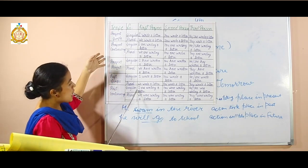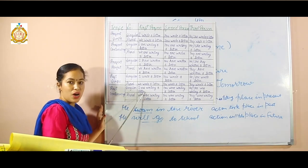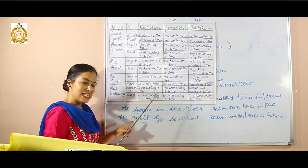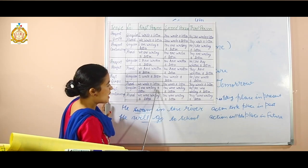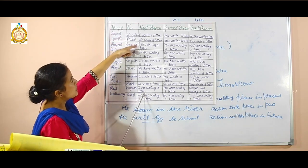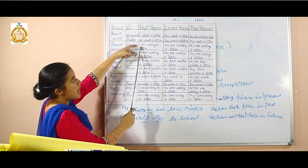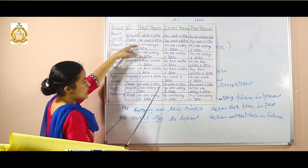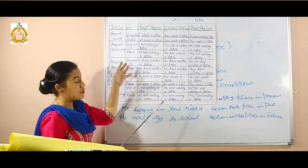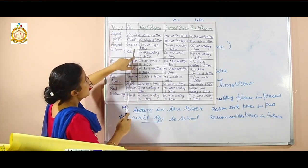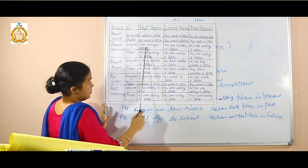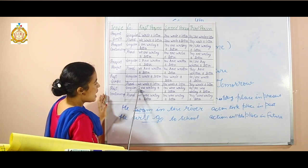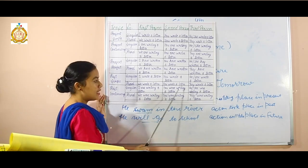Then comes past continuous tense. 'I was writing a letter.' We use the first form of the verb plus '-ing'. The difference between present continuous and past continuous is: in present continuous we write 'I am writing a letter', and in past continuous we write 'I was writing a letter.'